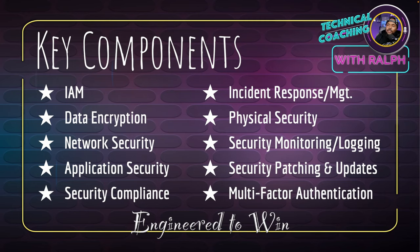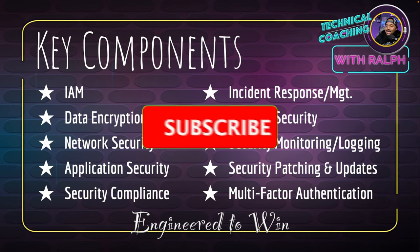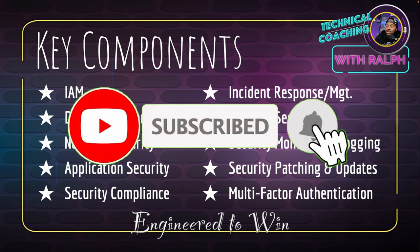What are some key components of cloud security? As we discussed in a very popular video, the identity and access management engineer role — identity and access management is probably the first key component of cloud security. A company can have a dedicated IAM engineer role, or they can incorporate that into cloud security. There's also data encryption, network security, application security, security compliance, incident response and management, physical security, security monitoring and logging, and security patching and updates.